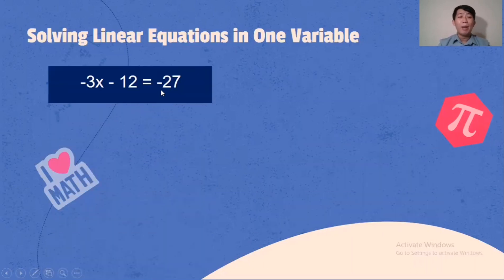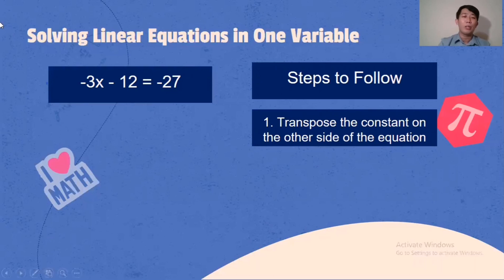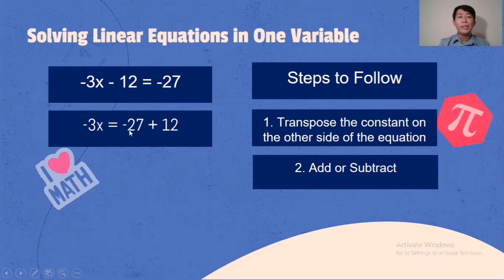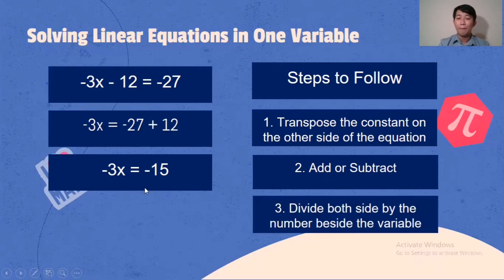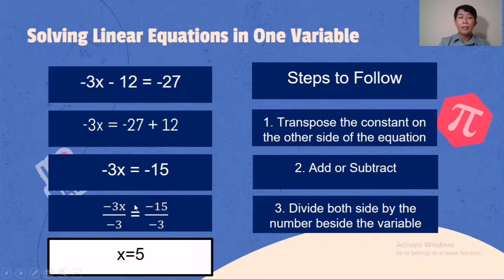Another example: -3x - 12 = -27. First step: transpose the constant on the other side. Negative 12 becomes positive 12. Then add or subtract: -27 plus 12 is -15. So -3x = -15. Divide both sides by negative 3: negative 3 divided by negative 3 is 1, giving x; and negative 15 divided by negative 3 is 5. Our final answer is x = 5.